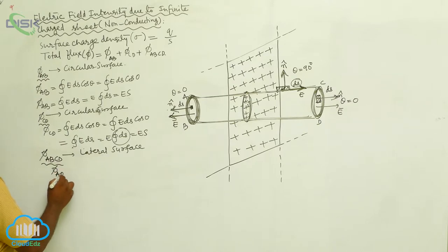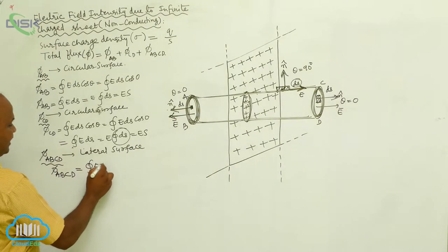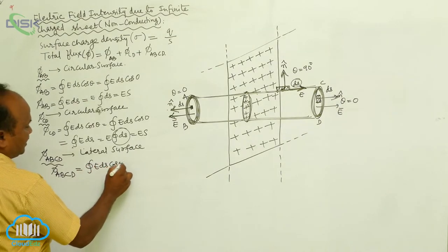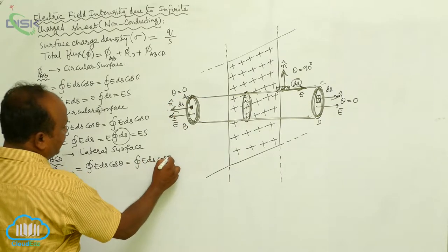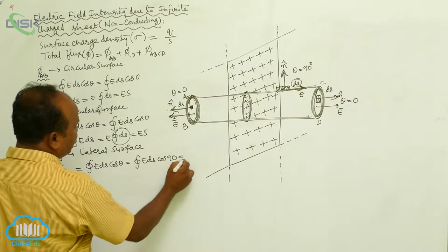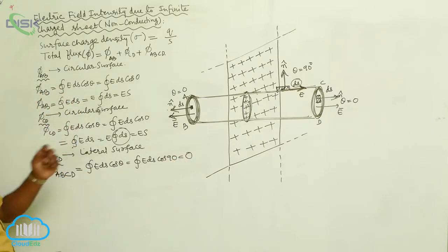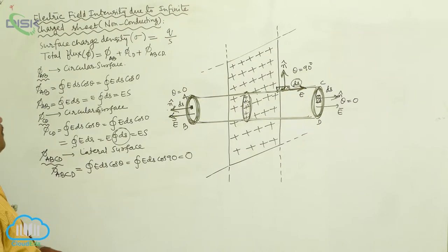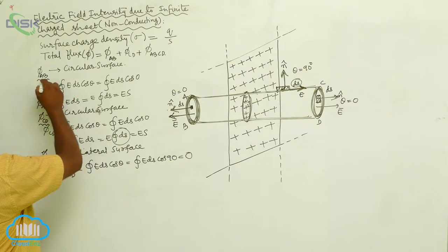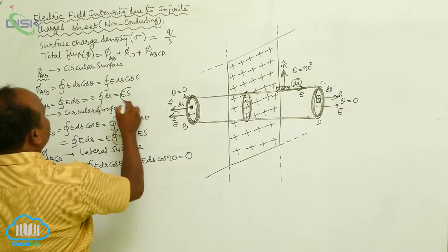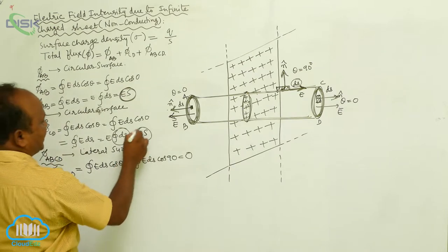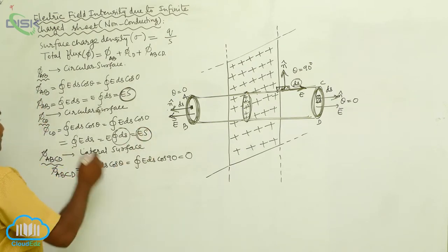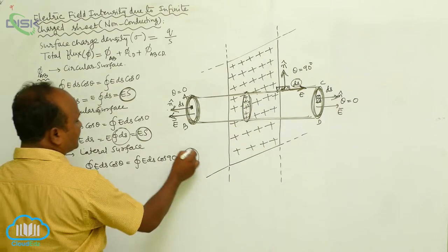Therefore, flux through ABCD equals the closed integral of E·dS·cosθ. Since theta equals 90 degrees and cos90° equals 0, the flux passing through the lateral surface ABCD is 0.